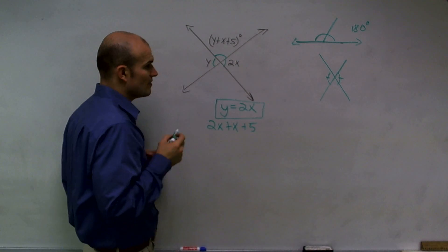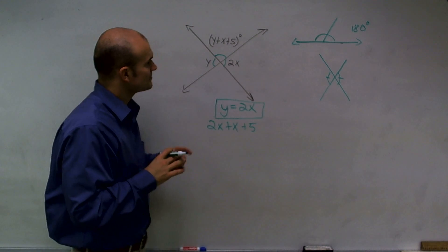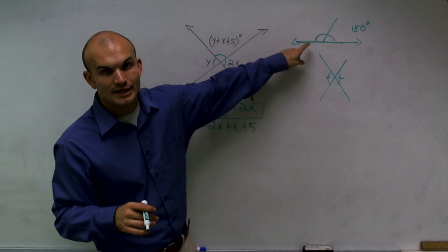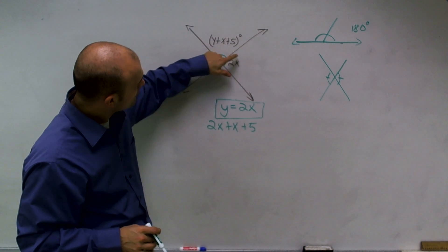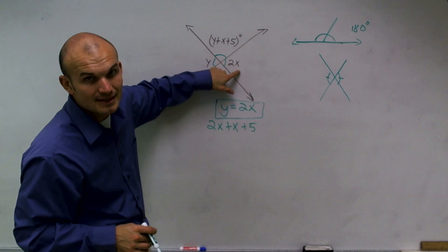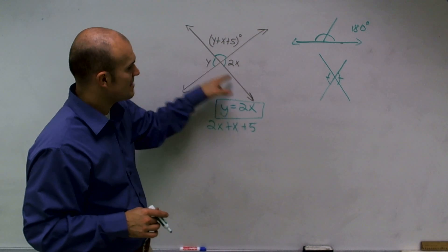Now, remember I talked about 180 degrees. I can say that this angle plus this angle equals 180 degrees because they make up a straight line.